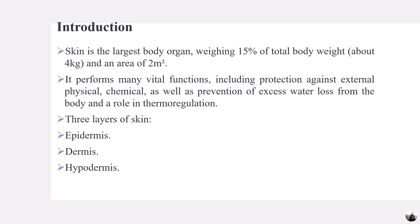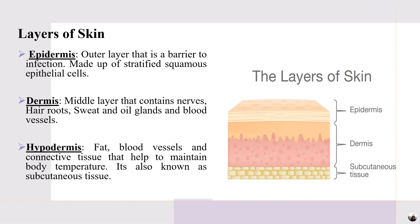It also has a role in thermoregulation. The three layers of skin are epidermis, dermis, and hypodermis. Epidermis is the outermost layer and acts as a barrier to infections; it is made up of stratified squamous epithelium cells. Dermis is the middle layer that contains nerves, hair roots, sweat glands, oil glands, and blood vessels.